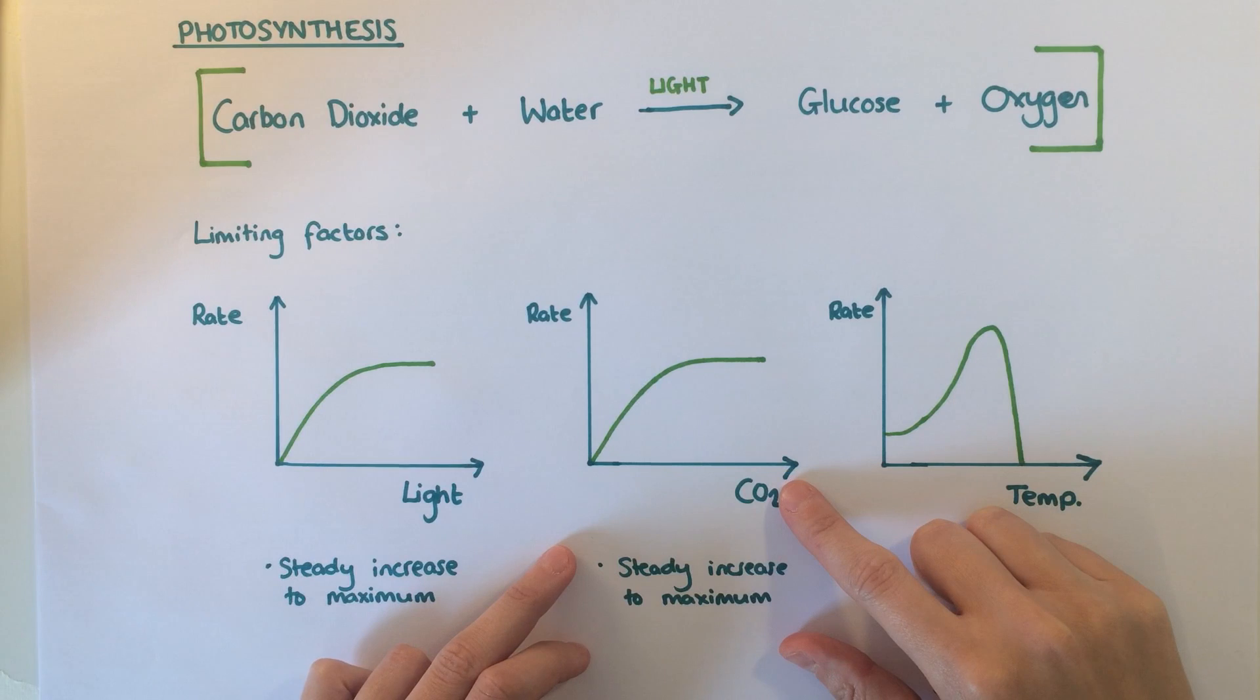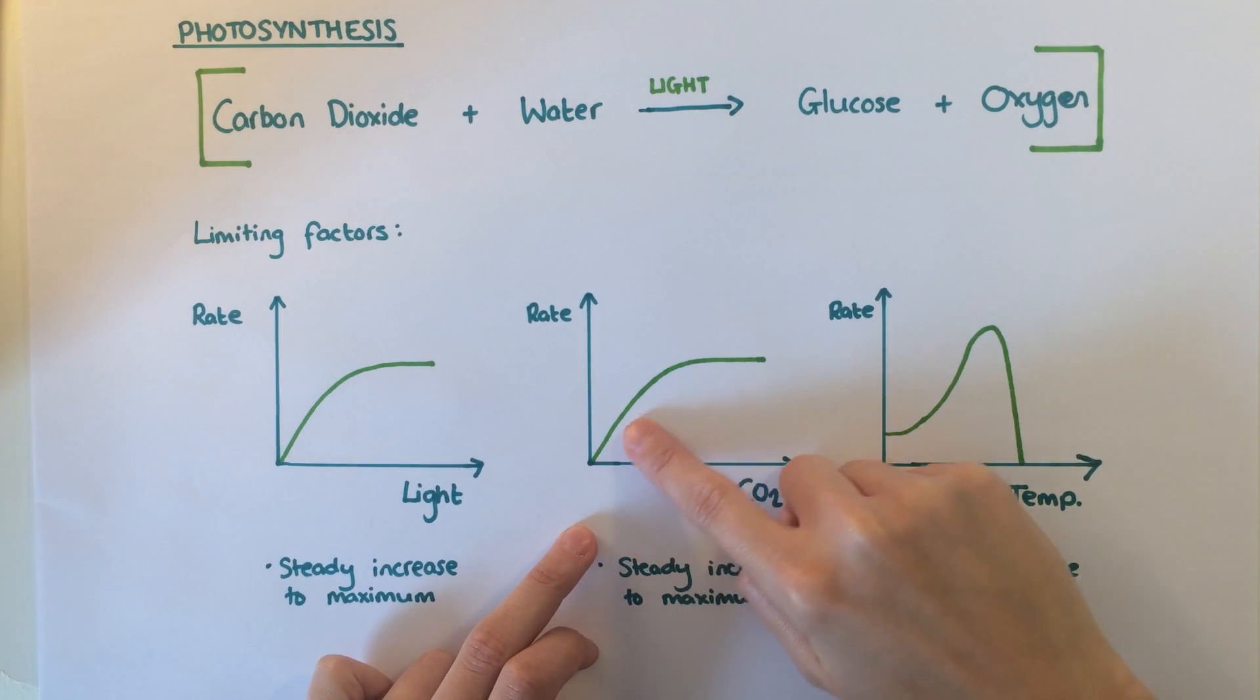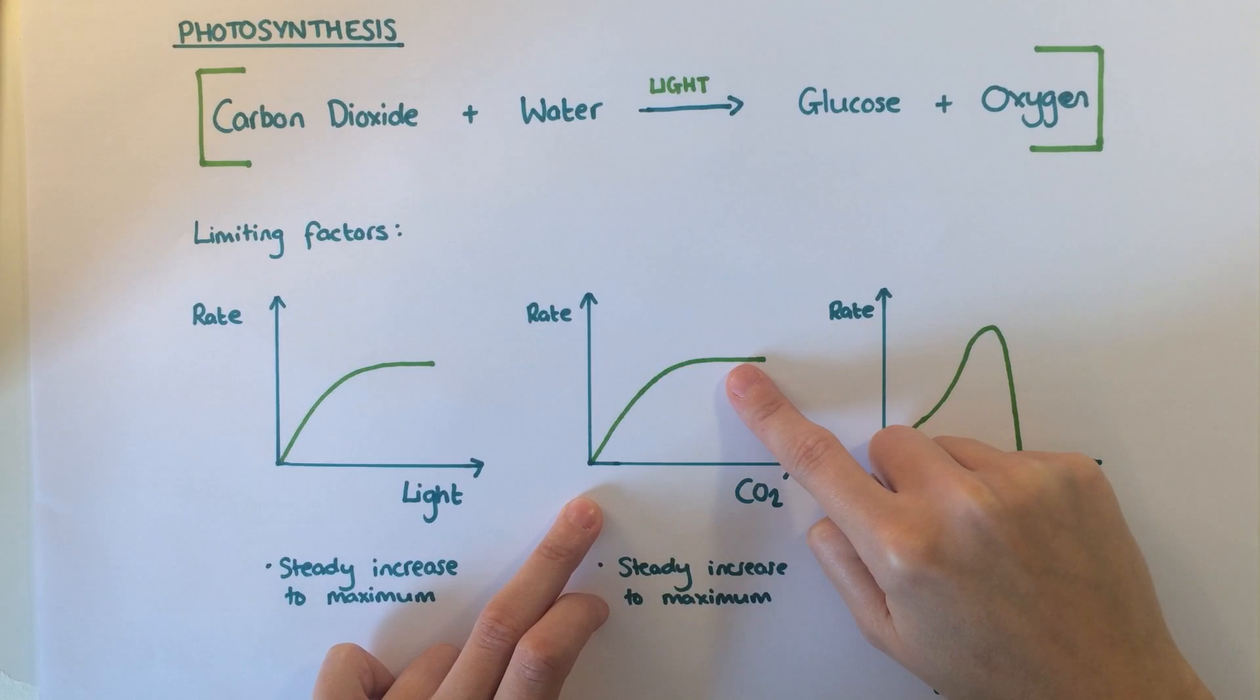The second graph for carbon dioxide has the same shape. As carbon dioxide increases, the rate of photosynthesis increases, up until a point where something else is the limiting factor.